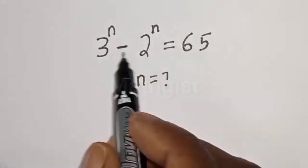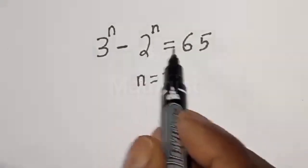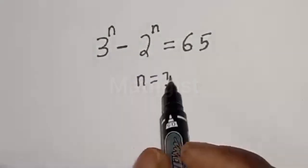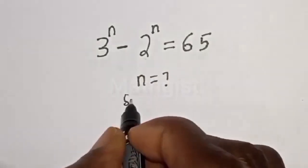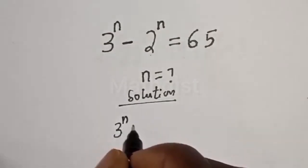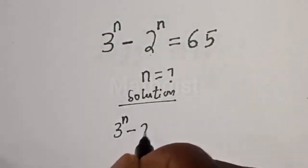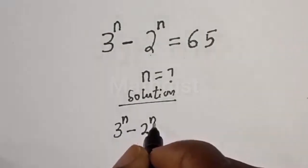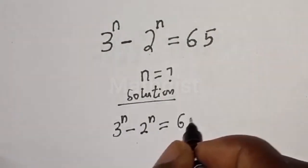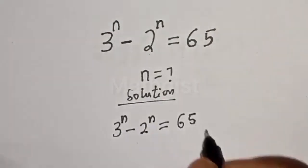3 raised to power n minus 2 raised to power n is equal to 65. What is the value of n? Solution: 3 raised to power n minus 2 raised to power n is equal to 65.